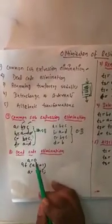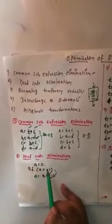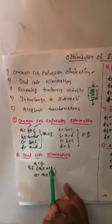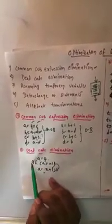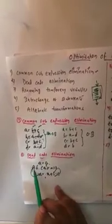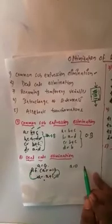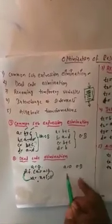The second approach is dead code elimination. Here we have three statements: A equal to 0, if A equal to 1, then A equal to X plus I. Since A is assigned 0, the condition 0 equal to 1 is always false, so the block inside the if statement can never be executed. We eliminate the if condition and its following statement, leaving only A equal to 0 as the optimized block.